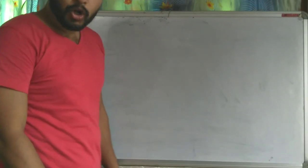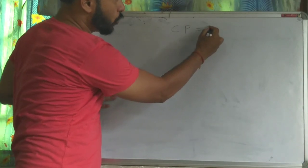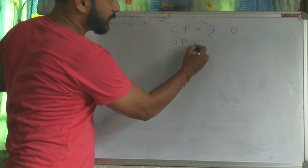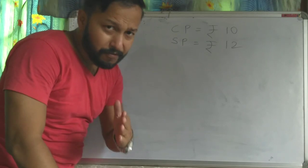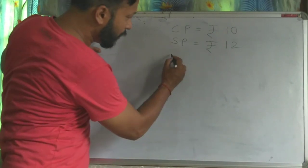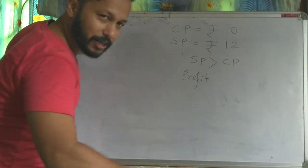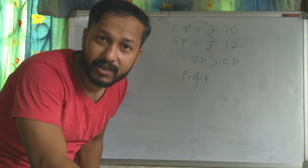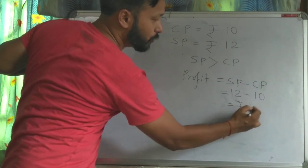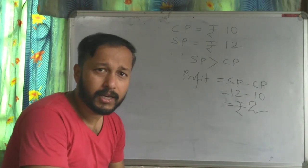Let us write it. Cost price is rupees 10, selling price is rupees 12. Since selling price is more than cost price, it's a profit. Now, how much profit did you make? Profit equals selling price minus cost price, that is 12 minus 10, so your profit is rupees 2.